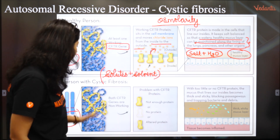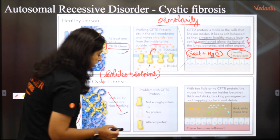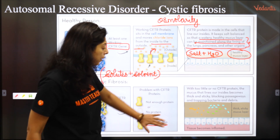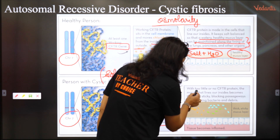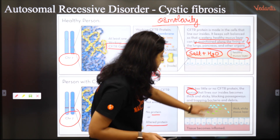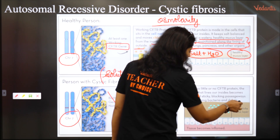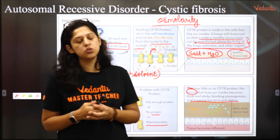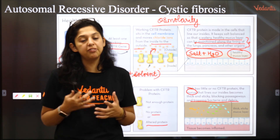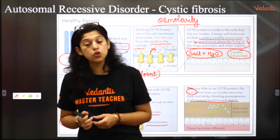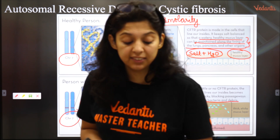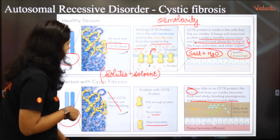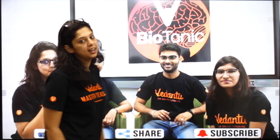But if the genes are not working, there is no protein or altered protein. Without the protein, the outer ions will not move away, so the outer mucus becomes thick and sticky, blocking passageways and trapping bacteria and debris. The ionic balance is lost, and dust particles and bacteria get trapped inside the thick mucus, leading to infections.